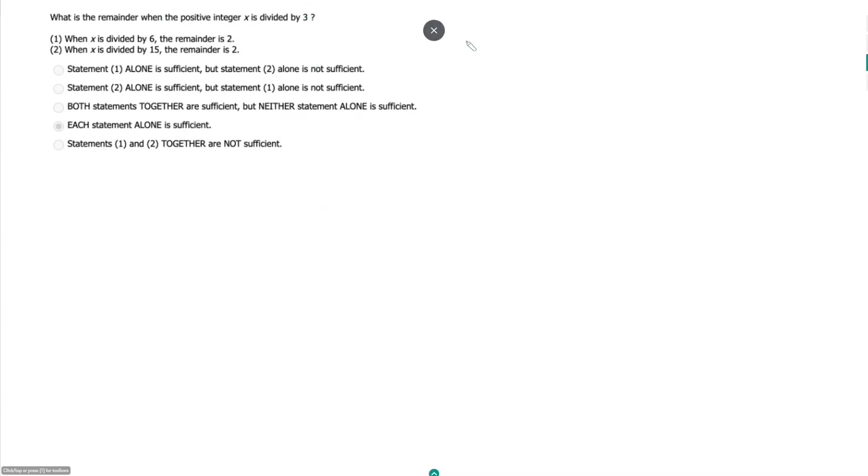So even though we don't know anything about x, we know our remainder can only be, there's only three options: 0, 1, or 2. So this is worth noting because even without knowing anything about x, we are still very restricted in our answer choices. There's only three possibilities before we even look at our statements. So our question is asking which one of these is our remainder.